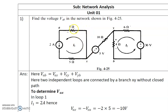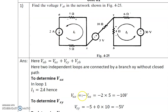VAX is nothing but the voltage drop across the 5 ohm resistance. In this loop there is a current source of 2 ampere, so 2 ampere current is flowing. The current is going from X to N. I1 is equal to 2 ampere in this loop. So VAX = VA minus VXA = minus I1 into 5 = minus 2 into 5 = minus 10 volts.